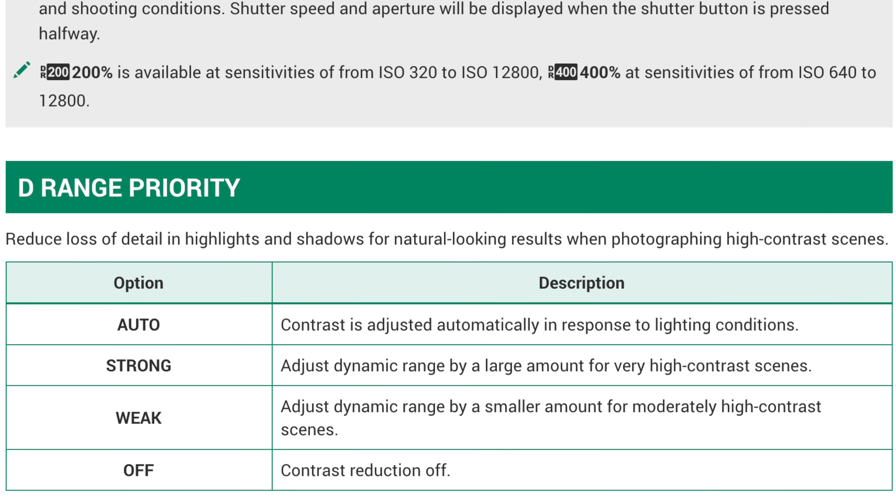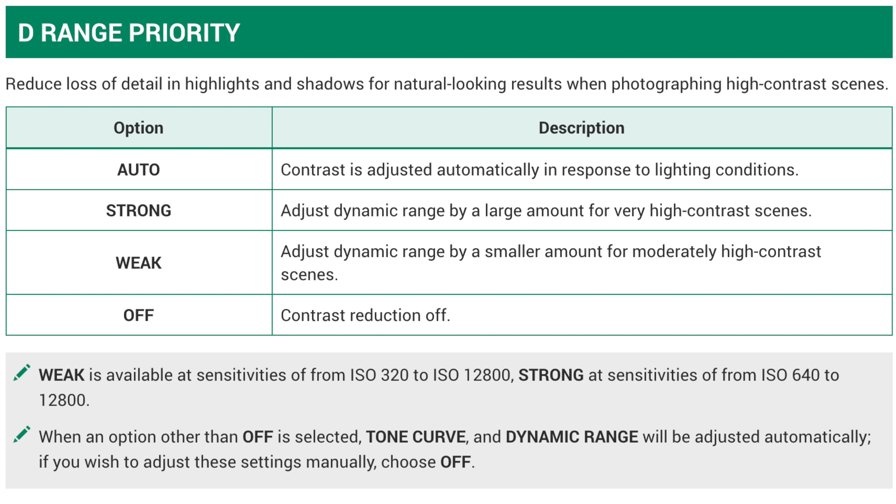There is an additional tool I did not discuss in this video related to dynamic range: the D-range priority tool, available in the X-T2, X-T3, and X-T4 cameras. The D-range priority tool builds upon the dynamic range tool and allows you greater control over the tone curve. I didn't want to get into it here because I really want you to have a solid understanding of the initial dynamic range tool and how it affects RAW files first. I will be doing another video specifically on the D-range priority tool soon.